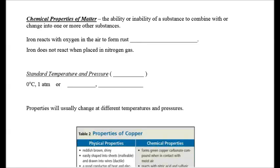A chemical property is the ability or inability of a substance to combine or change into another substance. Iron reacts with oxygen in the air to form rust. Rust is iron oxide. Rusting is a chemical property of iron. But iron does not react when placed in nitrogen gas. This is still a chemical property of iron.